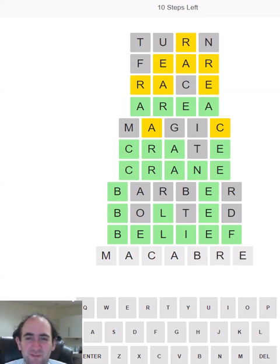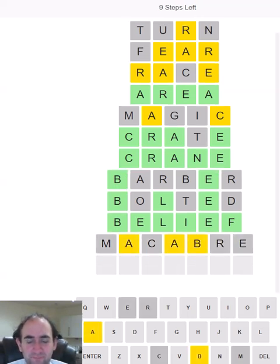Now let's go for macabre. Le grand macabre by Ligeti, a modern opera apparently. And once again we've got a bit lucky here. We've gone for a word with duplicated letters and there are indeed two A's in this word.